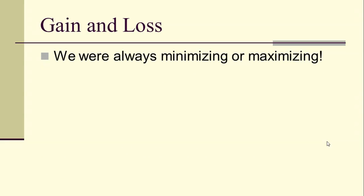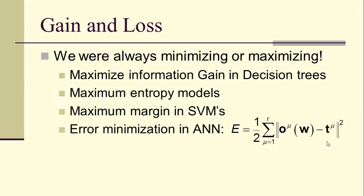So we're always minimizing or maximizing. Remember, we looked at maximizing information gain and decision trees, maximum entropy models, maximum margin and support vector machines, error minimization and artificial neural networks, the stochastic choice of a training term to minimize at any time. There was one big exception, and that was k-nearest neighbor networks.